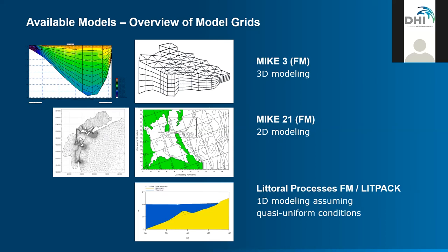The 2D and 3D flexible mesh models share the same mesh in the horizontal. For the 2D model, you do not need to resolve the vertical. For the 3D model, the vertical must be resolved. There are two examples showing a sigma or stretched vertical mesh in which the number of elements is kept constant. The height of the element changes with depth — elements are higher in deeper areas and thinner in shallower areas.